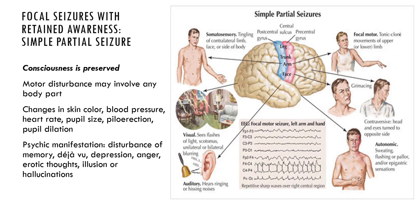There's something called a Jacksonian march in partial seizures, in which the abnormal activity starts in a small area — say a finger begins twitching — and then extends to the hand and then to the arm. The Jacksonian march is this abnormal electrical activity spreading across a part of the cortex, specifically the motor cortex, causing a growth in the area experiencing the abnormal movements.